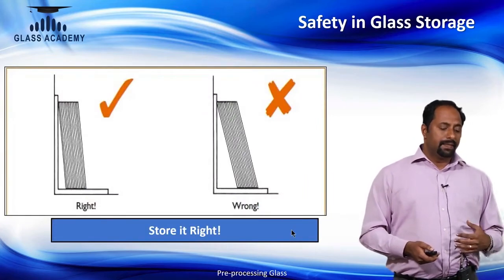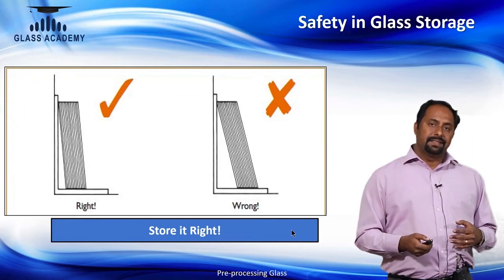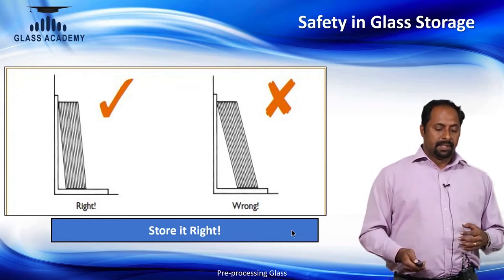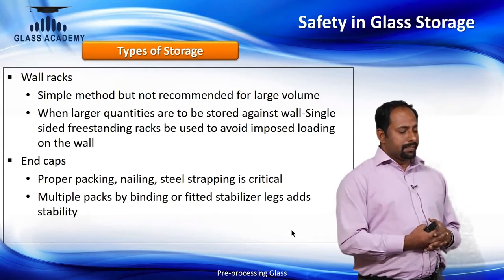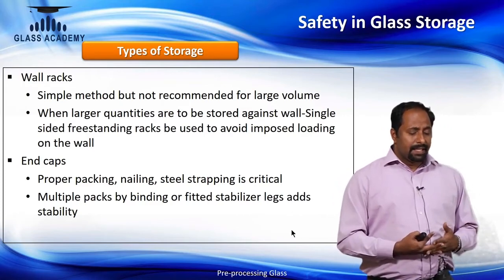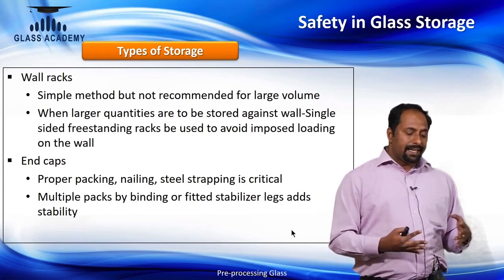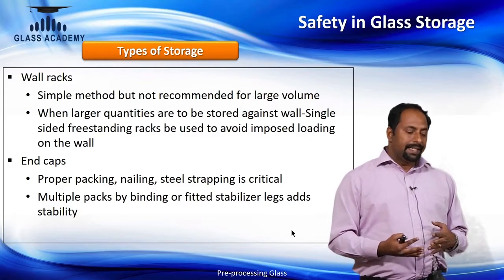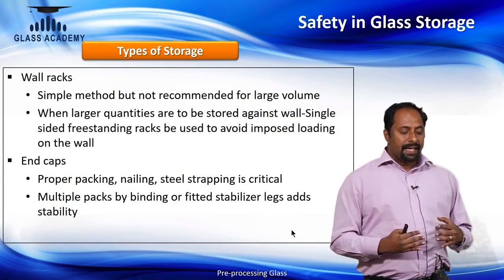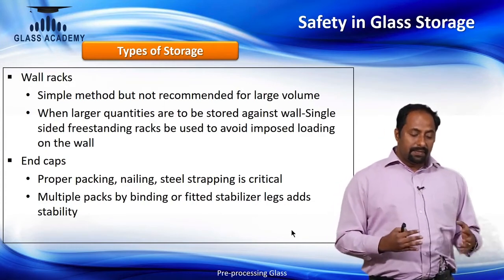The right and wrong angles of storage are clearly illustrated — the wrong angle makes it easy to predict that glass can slip, slide, and create an unsafe condition. Common accepted storage types include wall racks, a simple method not recommended for large volumes. For larger quantities, single-sided free-standing racks should be used to avoid imposed loading on the wall. There are also end caps, where glass is packed with nails and steel strapping, multiple packs are bound together, and stabilizer legs add stability.